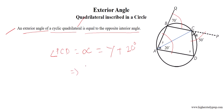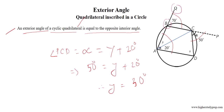Here, alpha equals 50 degrees. Therefore, 50 degrees equals Y plus 20 degrees, so Y equals 30 degrees. Similarly, the exterior angle QBC equals the opposite interior angle ADC of cyclic quadrilateral ABCD, therefore X equals 70 degrees.